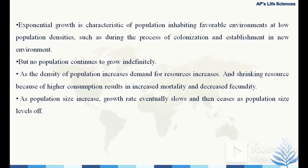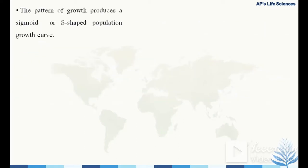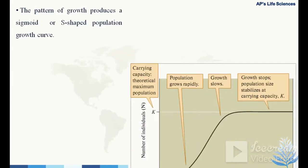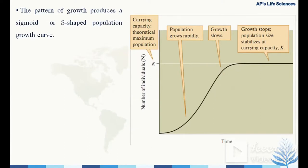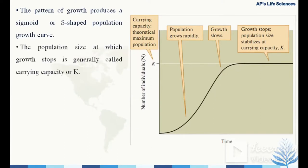As population size increases, the growth rate eventually slows and then ceases at a population size where it levels off. The pattern of growth produces a sigmoid or S-shaped population growth curve. The population size at which growth stops is generally called the carrying capacity, or K — the theoretical maximum population size the environment can support.